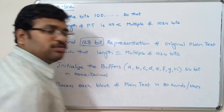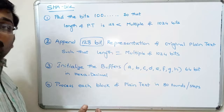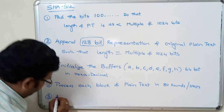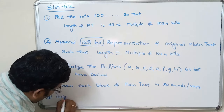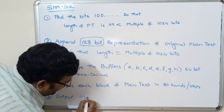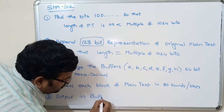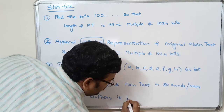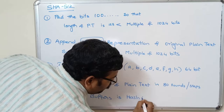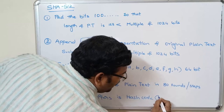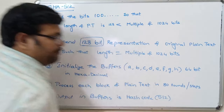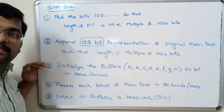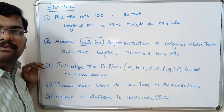The fourth step is to process each block of plain text in 80 rounds or steps. The fifth and final step: the output stored in the buffers is the hash code, which is of length 512 bits. This completes all five steps of the SHA-512 algorithm.